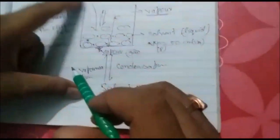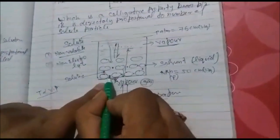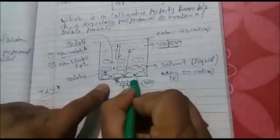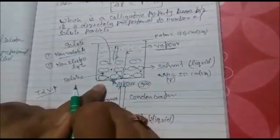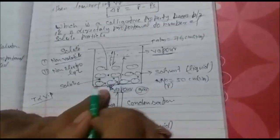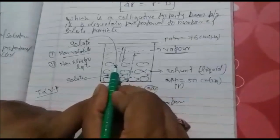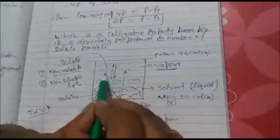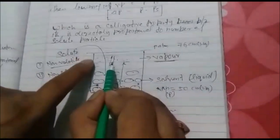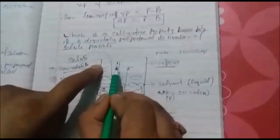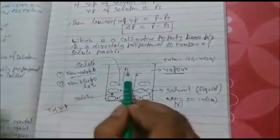When you put solute into the liquid, it occupies the space, intermolecular space. In that condition, solvent cannot move freely. As a result, less vapors are formed. When less vapors are formed, then automatically vapor pressure decreases.